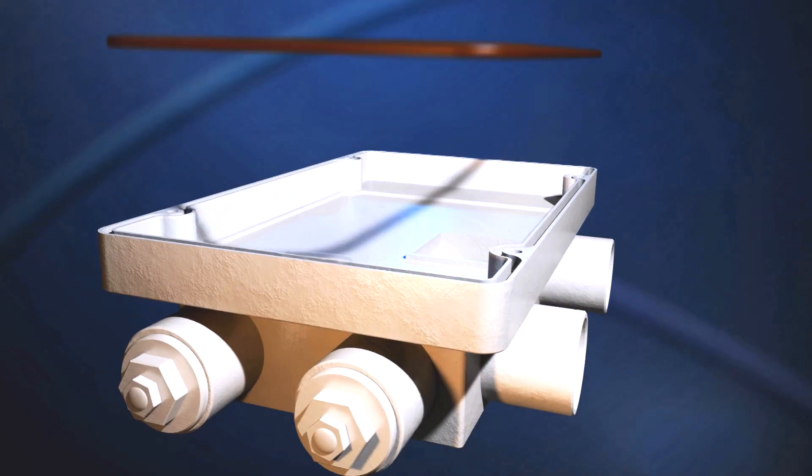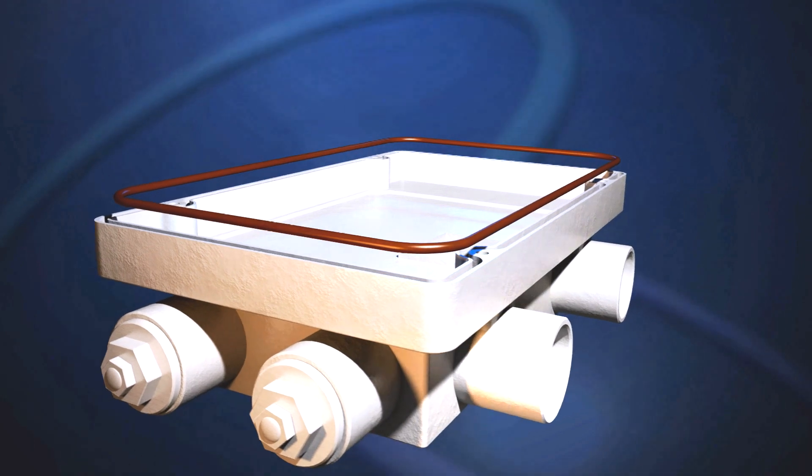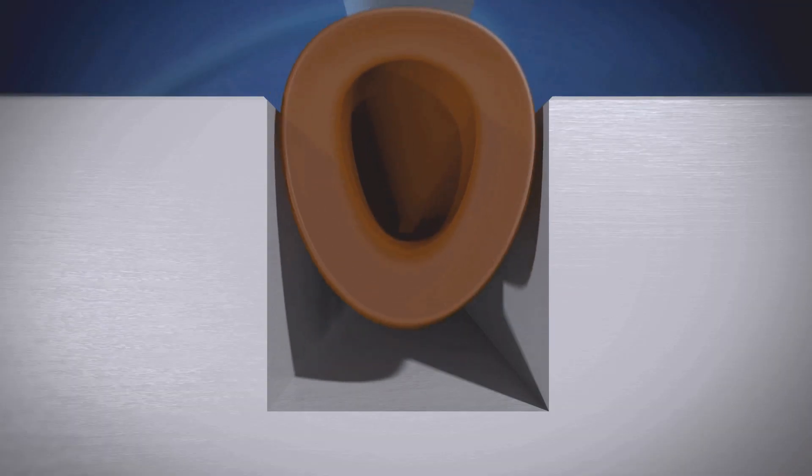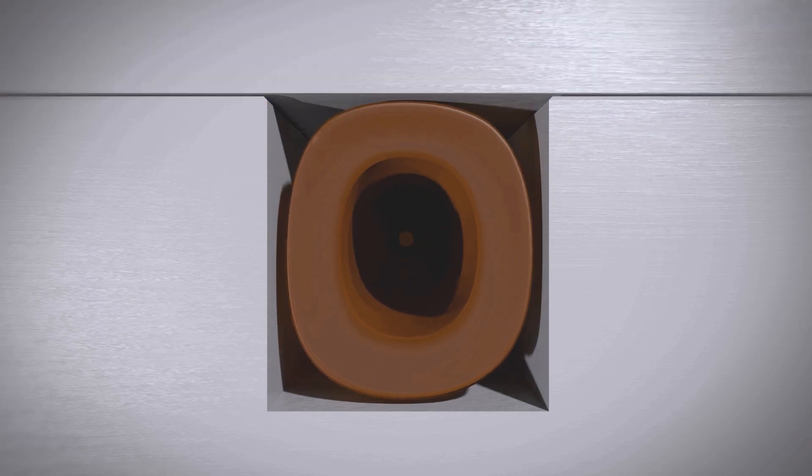Parker hollow O-rings reduce bolt loading and the stress exerted on the mating flanges. This reduced closure force is achieved by changing the cross-section from solid to hollow without lowering the material hardness.